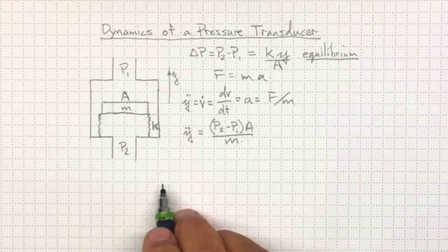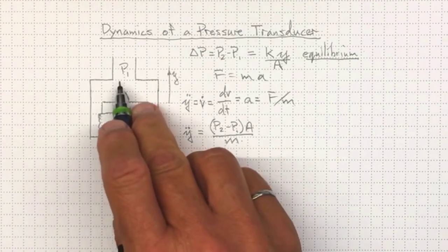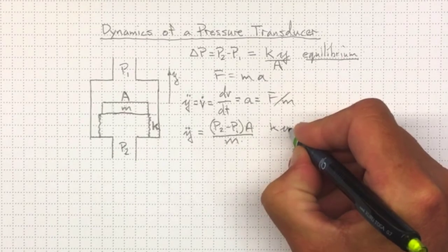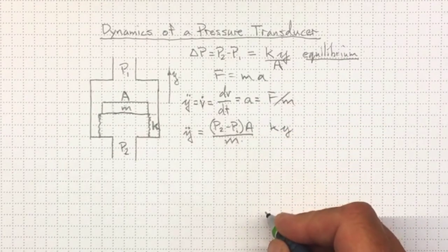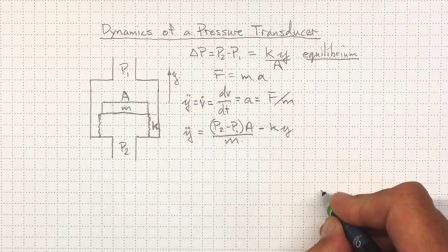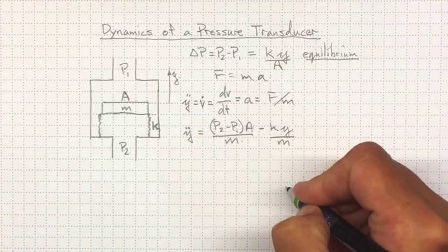Now there's also going to be some other forces acting due to the springy thing here. If it's already been displaced upwards, then there's going to be a spring force times Y acting in a downwards direction, so negative. And we have to divide that by M because of the F over M there.